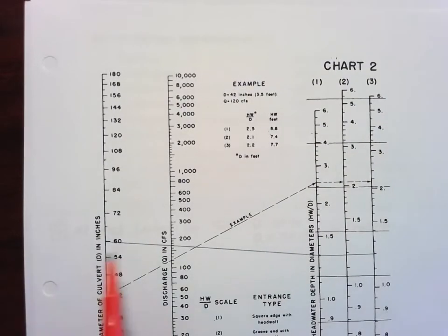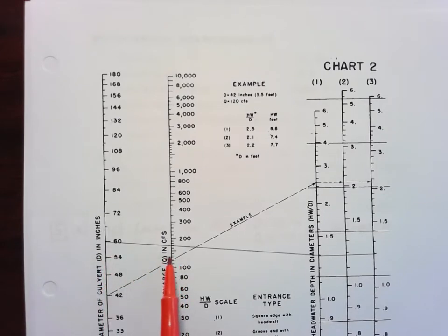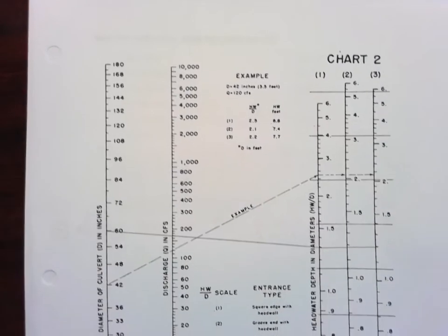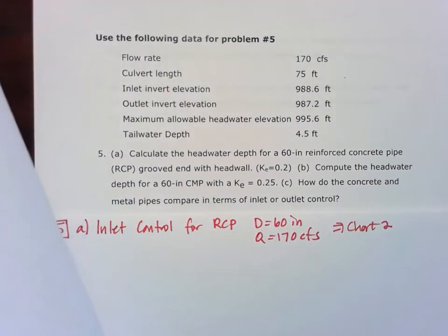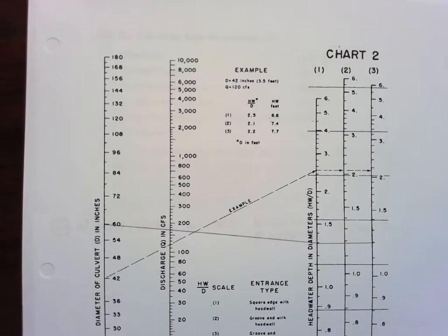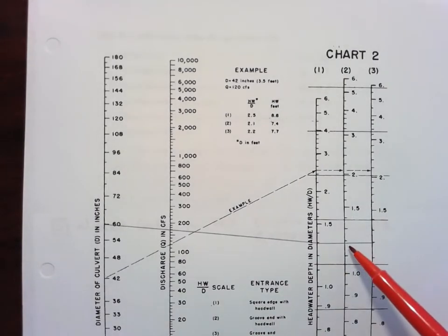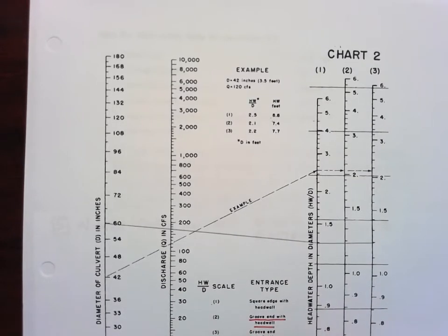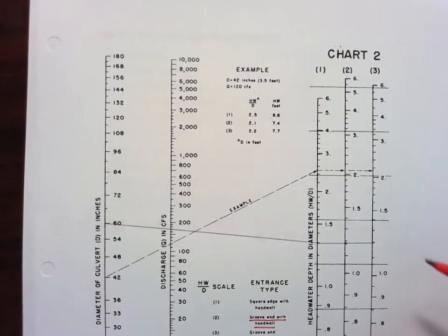So let's look at chart two. I've got my 60-inch diameter, I'm going through my 170 cubic feet per second discharge line, and I'm going to go all the way here to my entrance type. But remember, I do have a grooved end with a head wall, so I'm going to go over to this second line here, not all the way to the third, because I have grooved end with head wall. So I'm going to stop here.